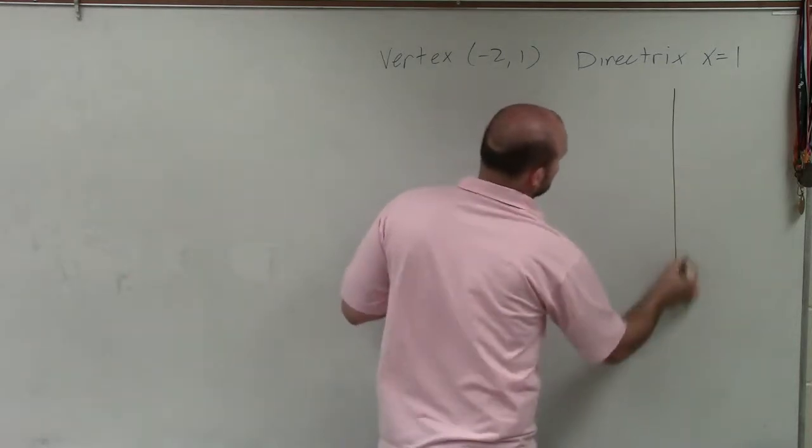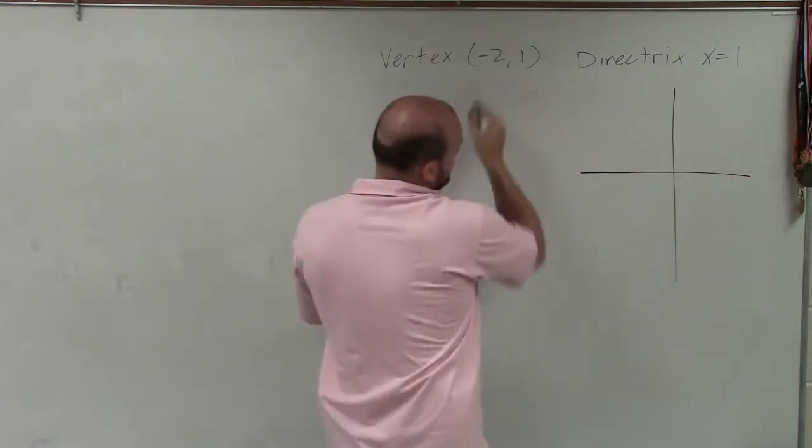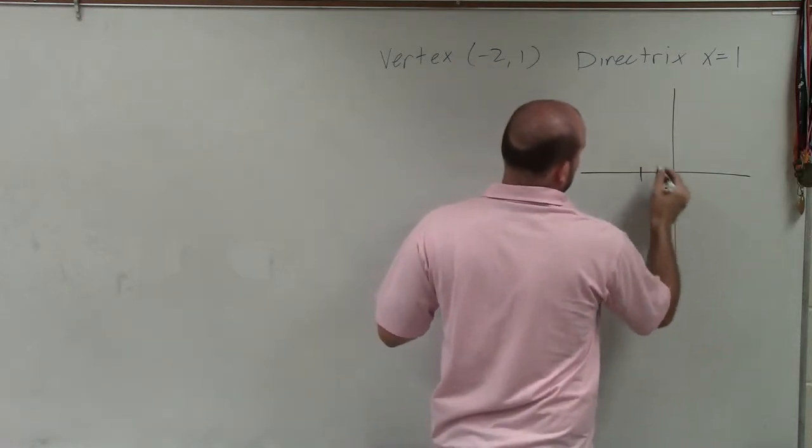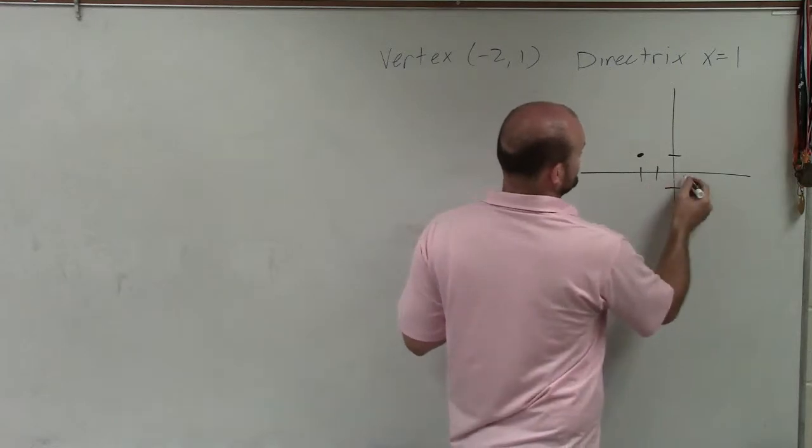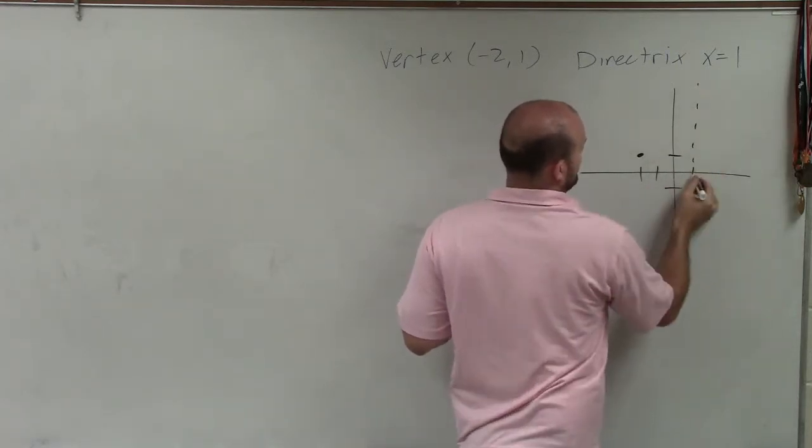So let's go and plot the information that we have. Here I have a vertex at negative 2, 1. That's up 1. And a directrix at x equals 1. So that's going to be over 1, up 1.